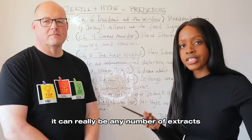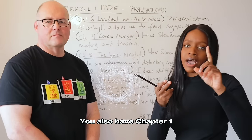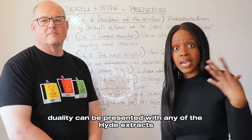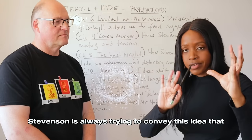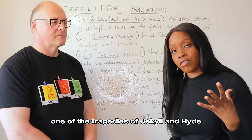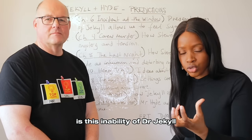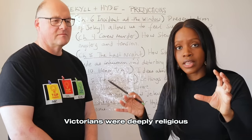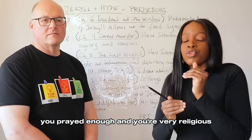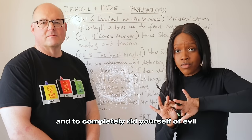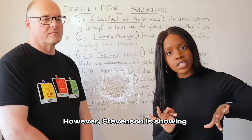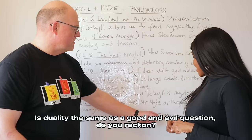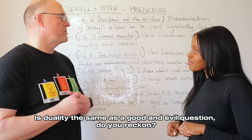If a duality question came up, it could fit any number of extracts — including Dr. Jekyll's confession. Chapter one is unlikely to come up since it appeared last year. Duality can also be presented through any of the Hyde extracts. Remember, Stevenson is always conveying the idea that one of the tragedies of Jekyll and Hyde is Jekyll's inability to accept the dual nature that resides within him. At the time, Victorians were deeply religious, with the prevailing Christian view that if you prayed enough, you could be completely good and rid yourself of evil. Stevenson is showing that this is not possible.